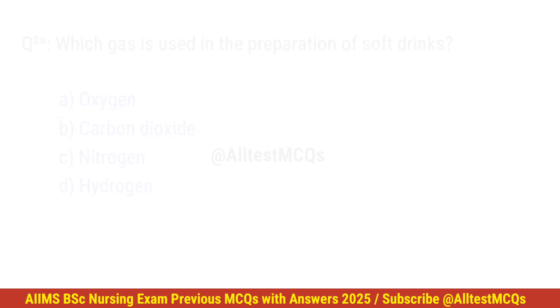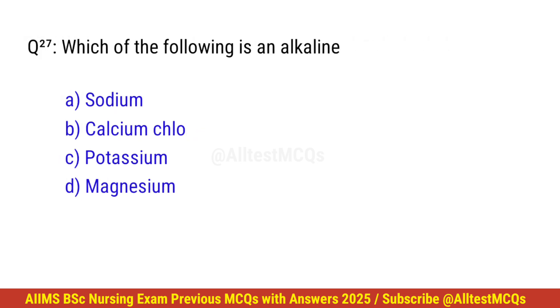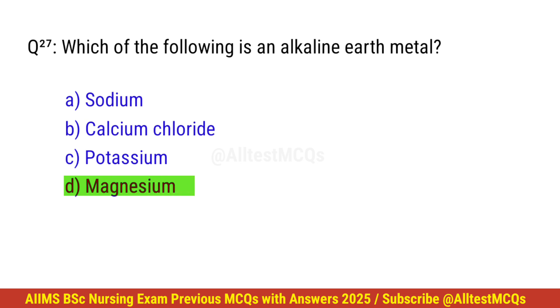Question number 27. Which of the following is an alkaline earth metal? Right option is D. Magnesium.